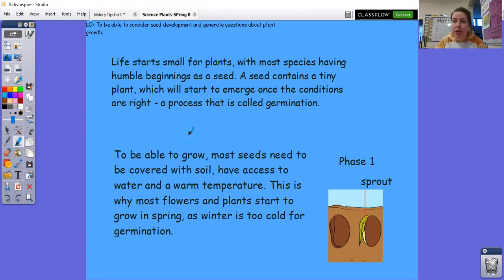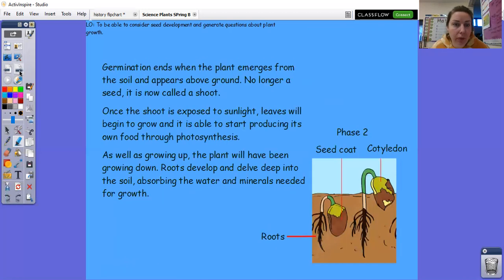So if they have the right conditions, like they've got the warmth, they've got the right soil, they will grow. So to be able to grow they have to have access to all of those things. And this is why most flowers and plants start to grow in spring because quite often winter is too cold for germination, especially in the UK. All right, so I've got a little picture here for you as well. This is the phase one and this is where the seed has gone into the soil and it starts to sprout. So germination then ends once the plant has come out of the ground and it appears above it. So no longer a seed now, it's now called a shoot.